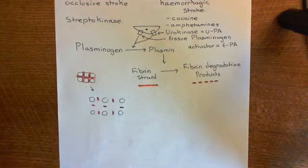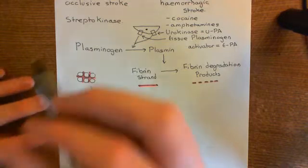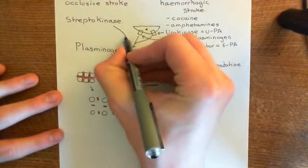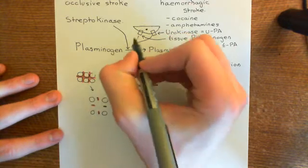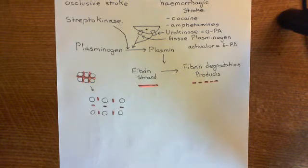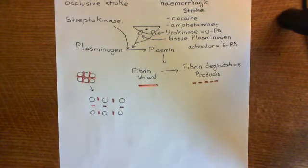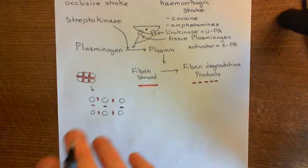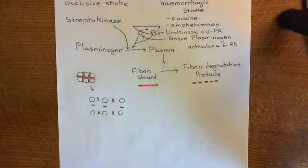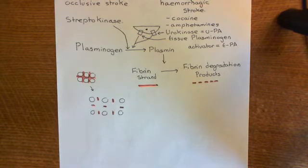If you've got a thrombus in, say, some blood vessel in the brain, you can give streptokinase, which also activates plasminogen into plasmin. If you give streptokinase to someone suffering from an occlusive stroke, it will convert plasminogen within the blood into plasmin, and plasmin will start to degrade fibrin strands into fibrin degradation products. The thrombus, or potentially a thromboembolus, will be broken down into pieces, dissolving the occlusion, restoring blood flow to the affected area of the brain and hopefully reducing damage.